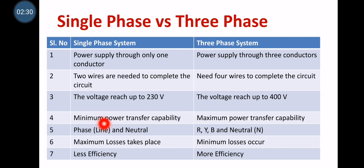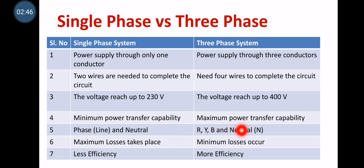Sixth difference: maximum losses take place in single-phase system, whereas losses are very minimum in case of three-phase system. If losses are more, efficiency of single-phase system will be very less — more losses means less efficiency. In case of three-phase system, efficiency will be higher because minimum losses take place, and efficiency will be improved.